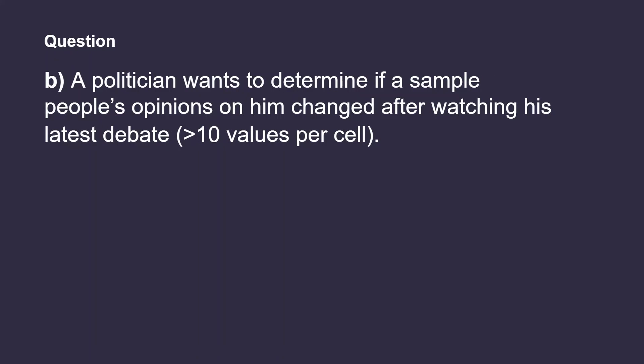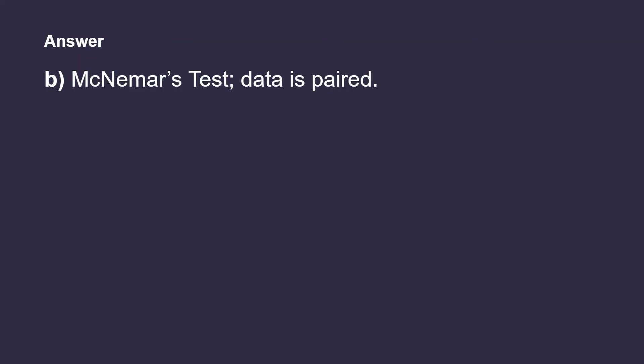Question B: A politician wants to determine if a sample of people's opinions on him changed after watching his latest debate. Note that there are greater than 10 values per cell. For question B, McNemar's test would be the best option since we have paired data. We know we are working with paired data because we are testing the same group of people's opinions before and after listening to the debate.